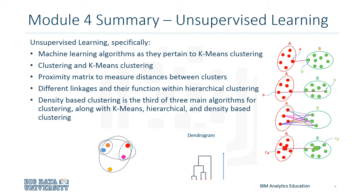In Module 4, you learned about clustering, as well as how to offer a more specific description of K-means clustering. Also covered was how to use a proximity matrix to measure distances between clusters, as well as some of the different types of linkages that work with hierarchical clustering, allowing you to gain an in-depth understanding of the three main algorithms used in clustering, namely K-means, hierarchical, and density-based.